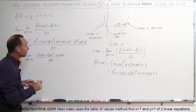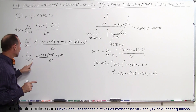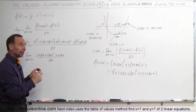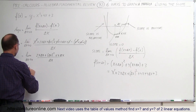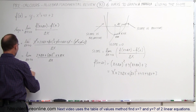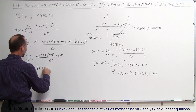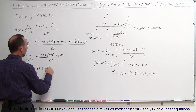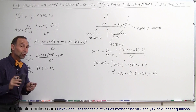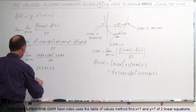Before letting delta x go to zero, notice there's a delta x in the denominator — if I let it go to zero now, I'd have zero in the denominator, which is undefined. So I'll divide the numerator by delta x first. That gives the limit as delta x goes to 0 of 2x plus delta x plus 4, because delta x squared divided by delta x is simply delta x, and the other delta x terms cancel. Now I can let delta x go to 0, giving slope equals 2x plus 4.